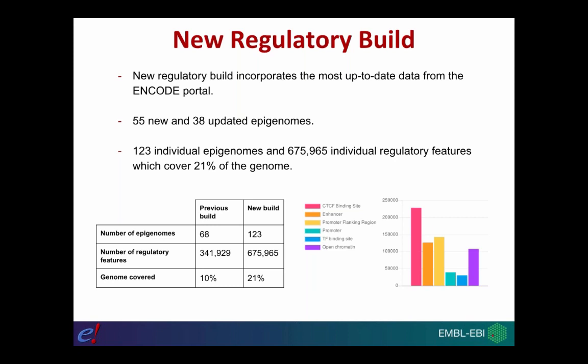In the new Ensembl 95 release we have 55 new epigenomes — 55 new different cell types — and updated data for 38 different cell types. In the previous release we had 68 different cell types, and adding 55 new ones brings us to 123 different cell types represented in the new Ensembl regulatory build. This has increased the number of regulatory features annotated and also increased genome coverage — going from 341,929 regulatory features before, across categories such as CTCF binding sites, enhancers, promoter flanking regions, promoters, transcription factor binding sites, and open chromatin features, up to 675,965 regulatory features in total.